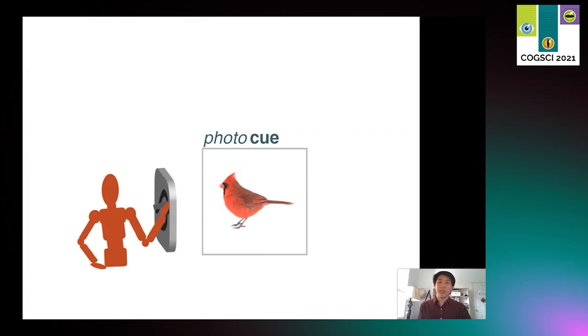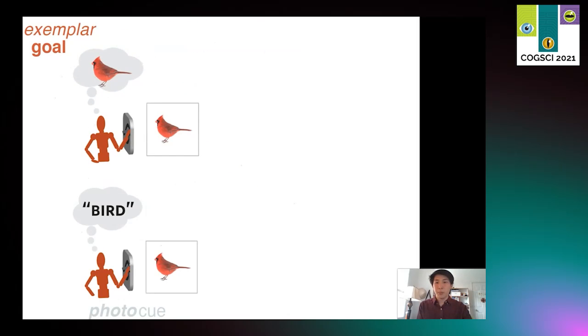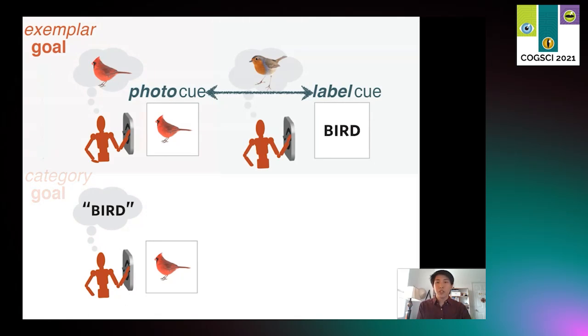We recruited participants online to perform a simple drawing task. In one of these groups, they were first cued with a color photo and then they were asked to draw that exemplar. To measure the impact of having different representational goals, a second group of participants was instead instructed to draw a generic bird that only needed to be recognizable at the category level, using the photo cue only as a reminder of what, for example, birds look like in general. To measure the impact of having a photo available, we recruited a third group of participants who were cued only with the category label bird, but still had the same goal of drawing a particular exemplar.